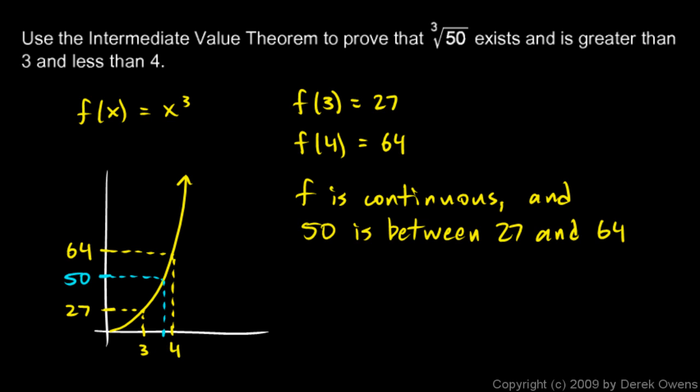such that f of that x value is 50. So 50 is between 27 and 64, and I'll go ahead and write it out. So there must be, and that's what we were trying to prove, trying to prove that it exists,